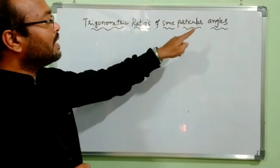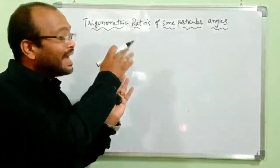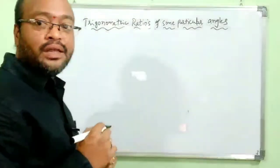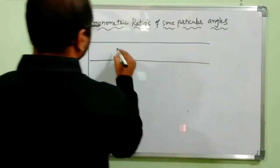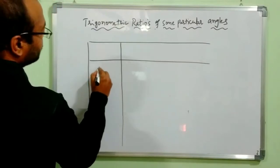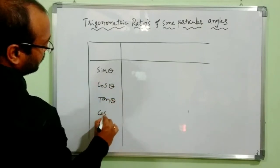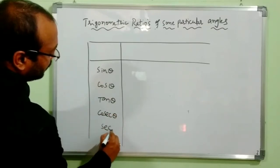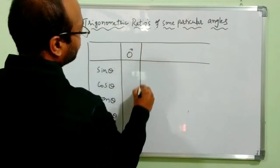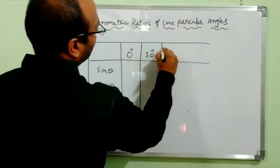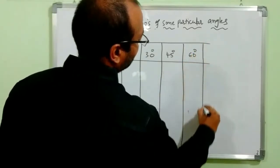Trigonometric ratios of some particular angles. For some particular angles, we have to remember the values of the trigonometric ratios. This is a very, very useful table. The trigonometric ratios are: sin θ, cos θ, tan θ, cosec θ, sec θ, and cot θ. The particular angles are: 0°, 30°, 45°, 60°, and 90° — which correspond to 0, π/6, π/4, π/3, and π/2 in radians.